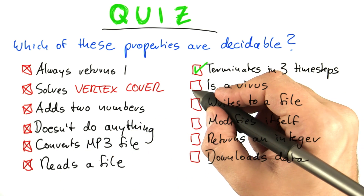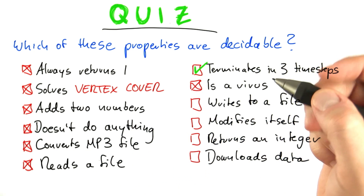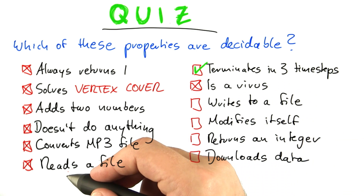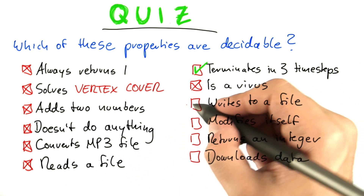'Is a program a virus?' — Rice's theorem. 'Writes to a file' — similar logic as 'reads a file.'